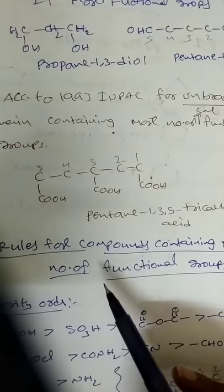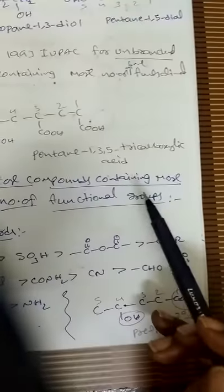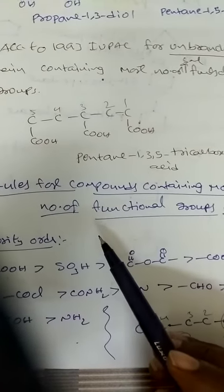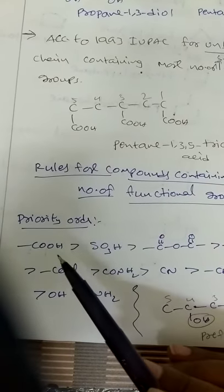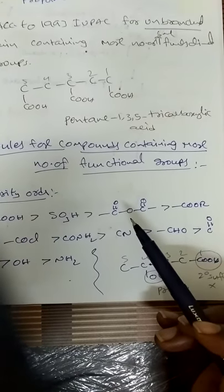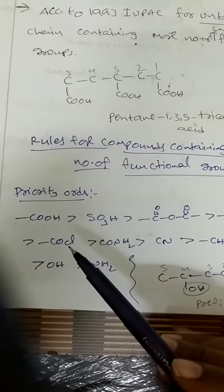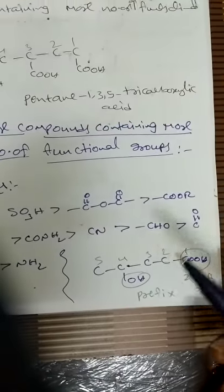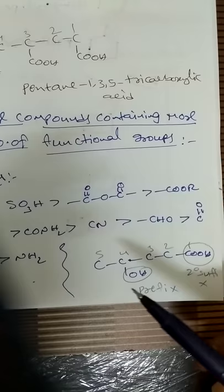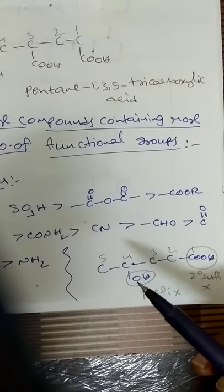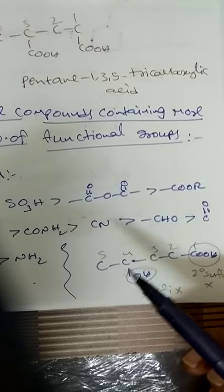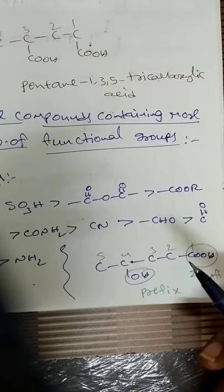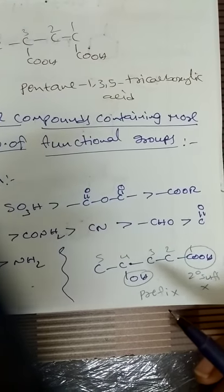For compounds containing more than one type of functional group, we follow a priority order: COOH > SO3H > anhydride > ester > COCl > CONH2 > CN > CHO > ketone > OH > NH2. The principal functional group is expressed as the suffix, while secondary functional groups are expressed as prefixes. For example, a 5-carbon chain with -COOH as principal group and -OH as secondary gives 4-hydroxypentanoic acid.